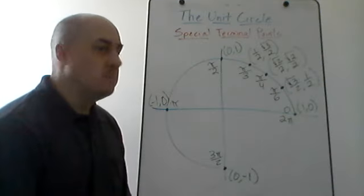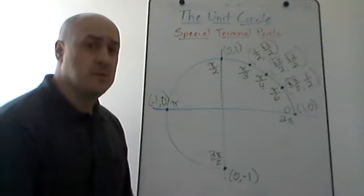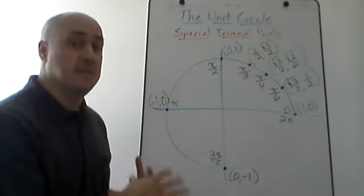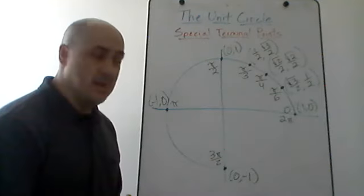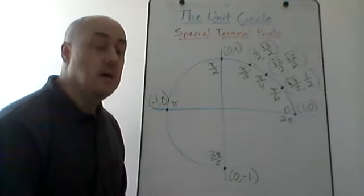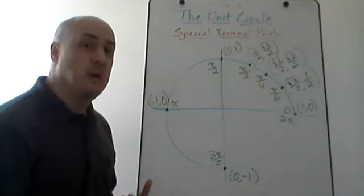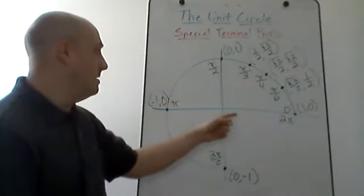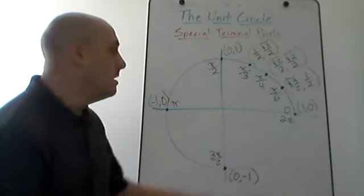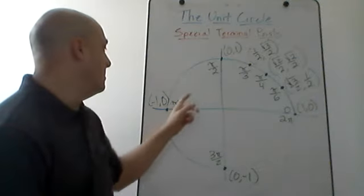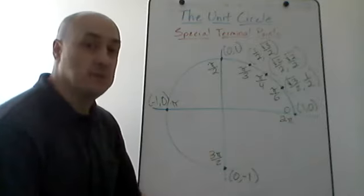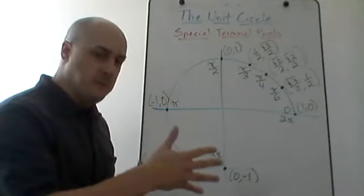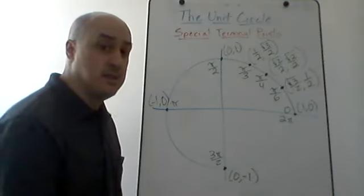In this video we're going to talk about some more special terminal points along the unit circle. If you haven't seen the other videos on the unit circle itself, the definition of the unit circle, and what we mean by a terminal point, definitely check those out. I also did one where we talked about the special terminal points on the positive x, negative x, and y-axis — the terminal points for pi over 2, pi, 3 pi over 2, and 2 pi.